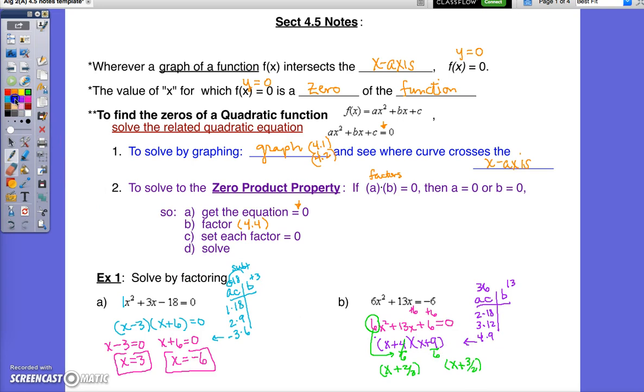At this point in time, I really don't have to now then put this A as the coefficient here because I could set each of these factors individually equal to 0 and solve from there. So if I have x plus 2 thirds equals 0, x equals negative 2 thirds. And if I have x plus 3 halves equals 0, x equals negative 3 halves. And there I have my solutions to solve by factoring.